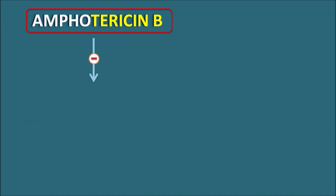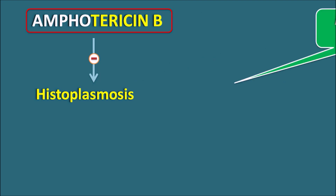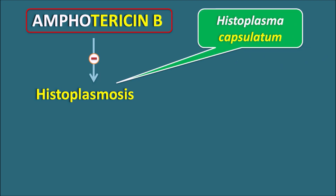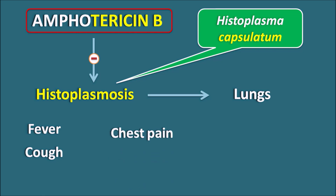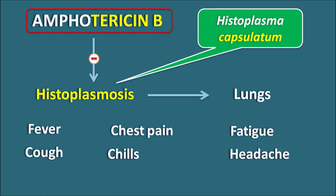Amphotericin B is also used in histoplasmosis, caused by Histoplasma capsulatum. This fungal infection affects the lungs, producing symptoms like fever, cough, chest pain, chills, fatigue, and headache. In this way, Amphotericin B can be used for yeast infections, yeast-like infections, mold infections, and dimorphic fungal infections.